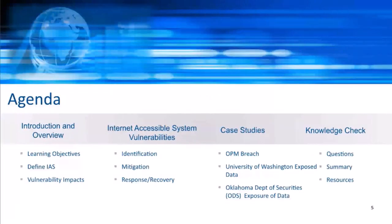Over the next hour Mike and I will present an introduction and definitions for internet accessible systems or IAS, explain the types of vulnerability indicators you can look for, and discuss the impact that IAS attacks can have on business operations. In the second half of the webinar we'll use the identify, mitigate, and respond framework to explain how to identify one of these attacks, best practices to prevent and mitigate damage, and how to respond and recover. We'll also present a series of case studies using real-world examples of internet accessible system attacks, the impacts, and how the organizations responded.